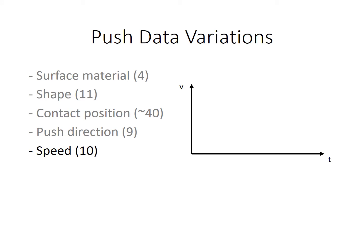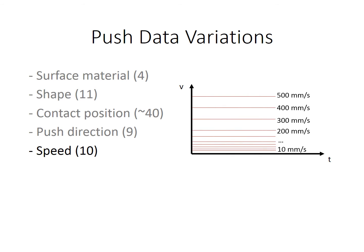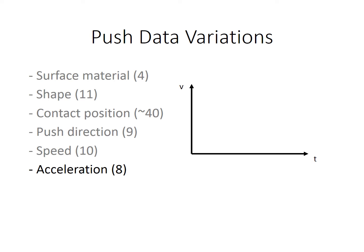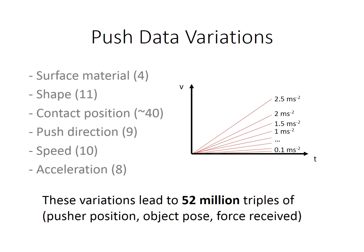Fifth, the pushing speed ranges from 500 mm per second to 10 mm per second, that is from very dynamic pushes to quasi-static pushes. Sixth, we vary the acceleration from 2.5 to 0.5 to 0.1 m per second squared. These variations lead to 52 million triples of pusher position, object pose, and force received that can be used for model testing and learning.